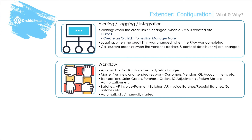Workflows and notifications can be configured around master files — when a record is created or amended — such as customers, vendors, General Ledger accounts, or any third-party master file. You can also configure workflows around transactions like sales orders, purchase orders, inventory control adjustments, and return material authorizations. And you can configure workflow around batches like AP invoice batches, AP payment batches, AR invoice batches, AR receipt batches, and General Ledger journal batches.